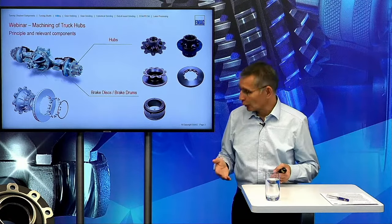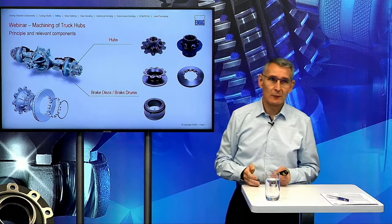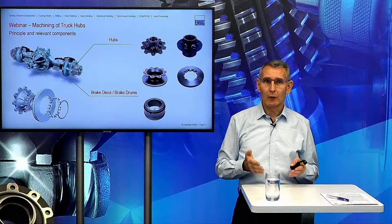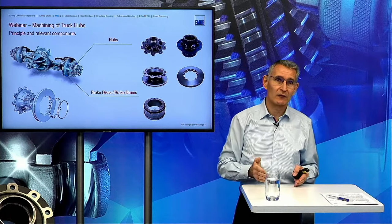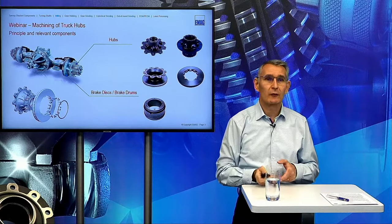If we have a close look at the parts normally inside a complete axle system — and here we are talking about driven axles, non-driven axles, and trailer axles — we have the hubs themselves in different variations, brake discs or friction rings for the mounted ones, and brake drums. All of these parts we can machine on our machines, but today we are focused on the hubs.